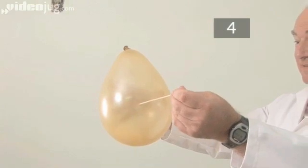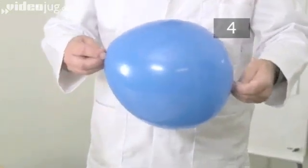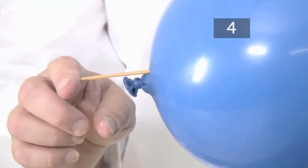On the sides of the balloon, these polymer chains were stretched to their limit. But at the neck of the balloon, the polymers were much less stretched. So when pierced, there was enough room to allow the needle in between the chains without breaking them.